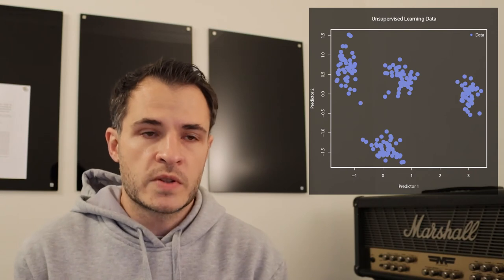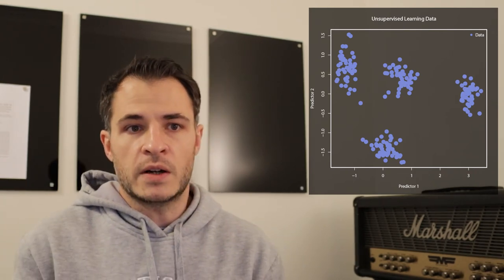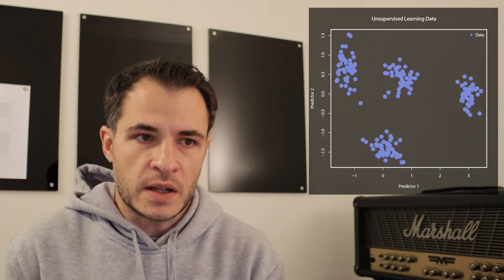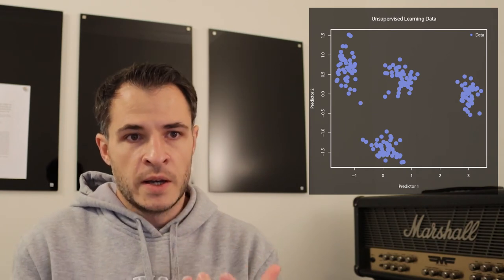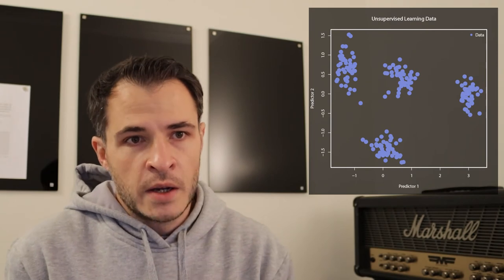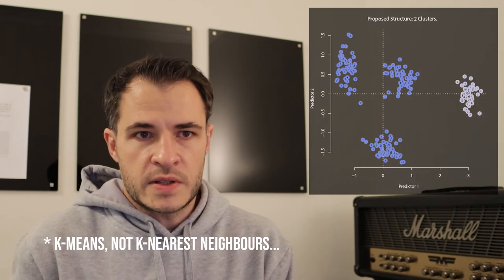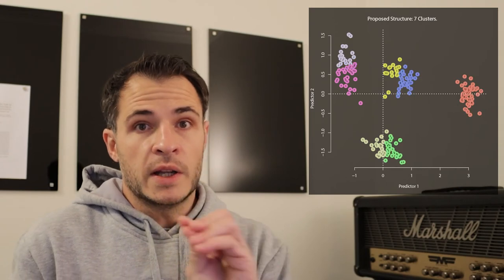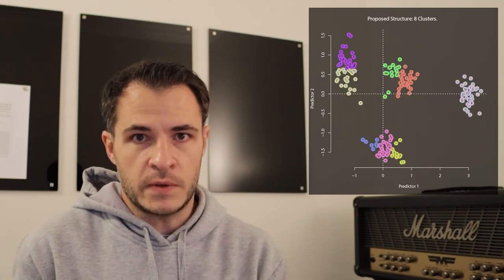For unsupervised learning problems, we need to figure out algorithms for extracting such structures — typically these will be clustering algorithms. For this example, I've run a simple K-nearest neighbors clustering algorithm. What it does is, based on where the observations are, it will try to assign new labels to them. So that's the key difference: in the supervised learning case, you're given examples of labels.